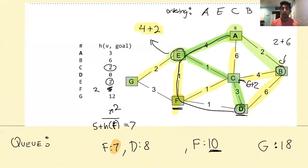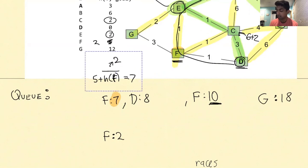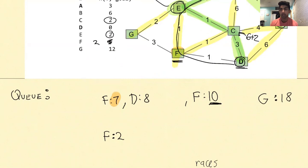If we change the heuristic of F to 2, what's going to happen is F will be removed before D. We'll find there's a better way to get to D via F and actually find the true shortest path. To recap, the answer to the last question is F: 2, and this is a very tricky question. Hopefully this helped — all of this stuff is pretty fun but definitely confusing, so feel free to come to office hours or live Q&A if you have questions. Have a good one!